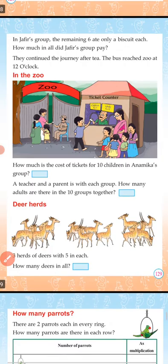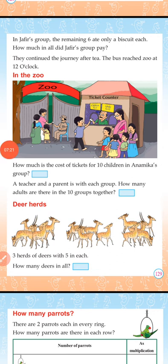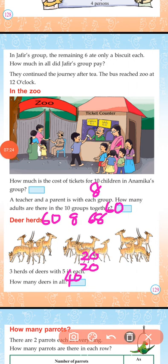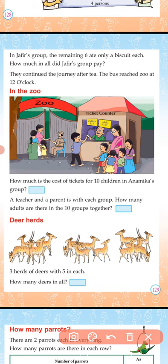Moving to the next page. In Jafar's group, the remaining six ate only a biscuit each. How much in all did Jafar's group pay? Six ate only a biscuit. Biscuit is two rupees, so six twos are yes, twelve. You should write here six twos are twelve.